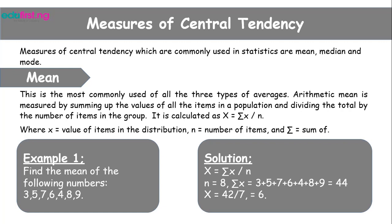It is calculated as: x̄ = Σx ÷ n, where x is the value of items in the distribution, n is the number of items, and Σ is the summation sign. For example, find the mean of the following numbers: 3, 5, 7, 6, 4, 8, 9. Substituting the values into the formula, the answer is 6. Therefore, 6 is the average of the set of numbers given.